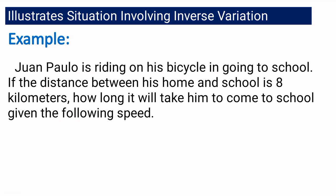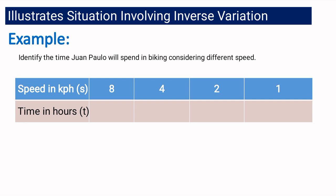Let me show you a situation that involves inverse variation. Paolo is riding his bicycle to school. If the distance between his home and school is 8 kilometers, how long will it take him given the following speeds? If his speed is 8 km/h, it takes 1 hour. If his speed is 4 km/h, it takes 2 hours. If his speed is 2 km/h, it takes 4 hours. And if his speed is 1 km/h, it takes 8 hours.